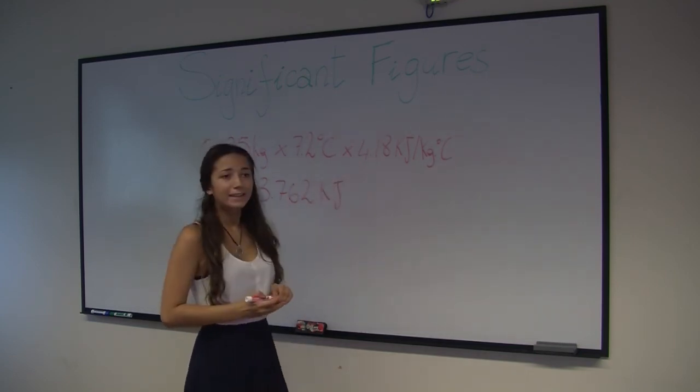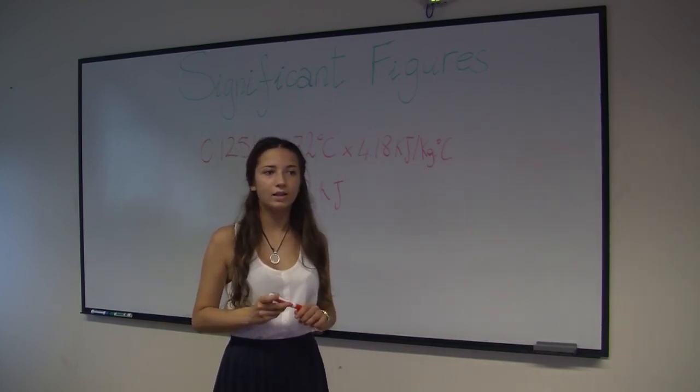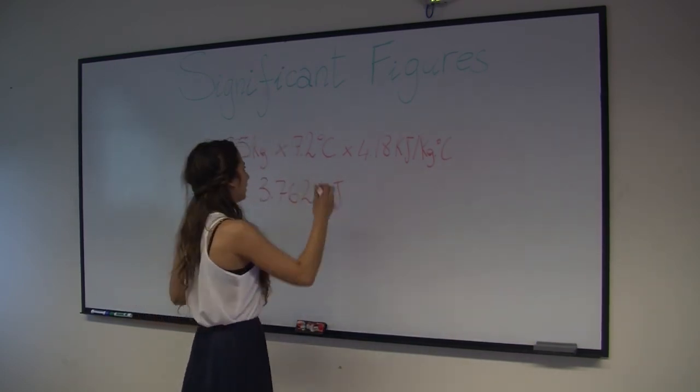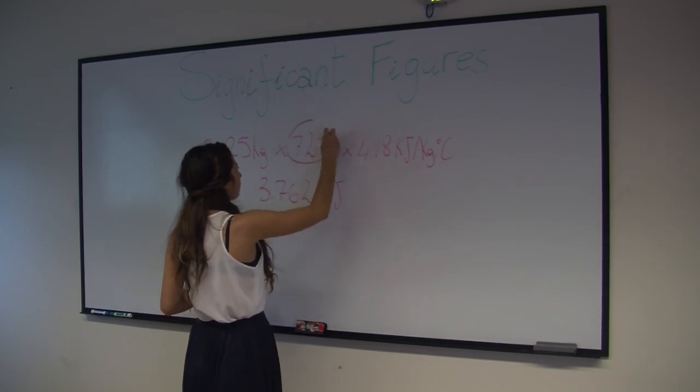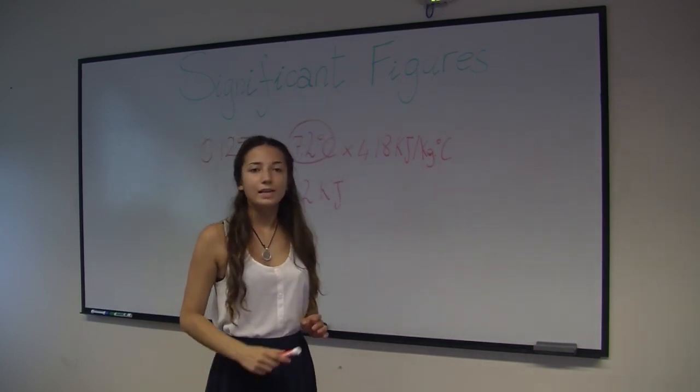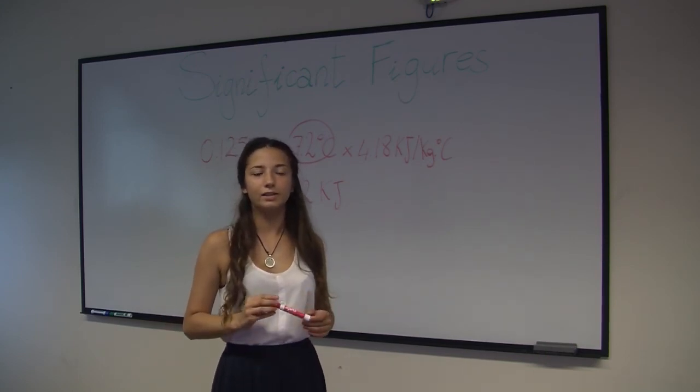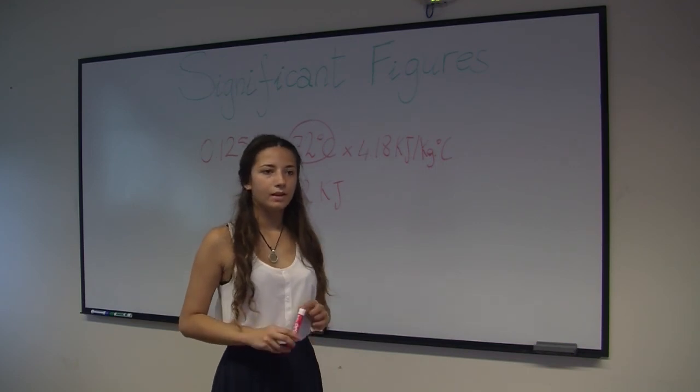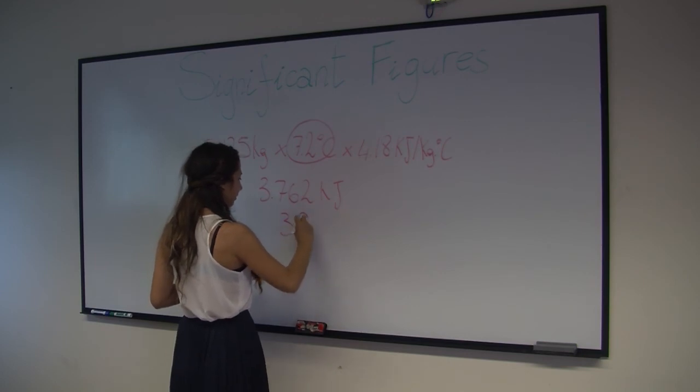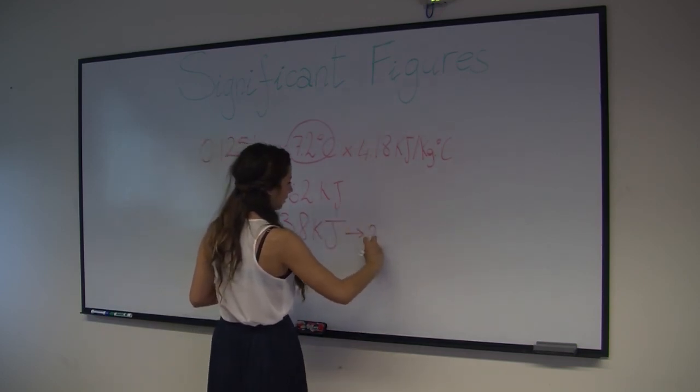However, we cannot add precision, and we have to round the product to the same number of significant figures as the least precise number in this operation. In our case, it's the temperature that was given to us with two significant figures. As you can see, the number of significant figures is consistent with the precision inherent in the experimental data. Therefore, our final answer has to be 3.8 kJ, as expressed in two significant figures.